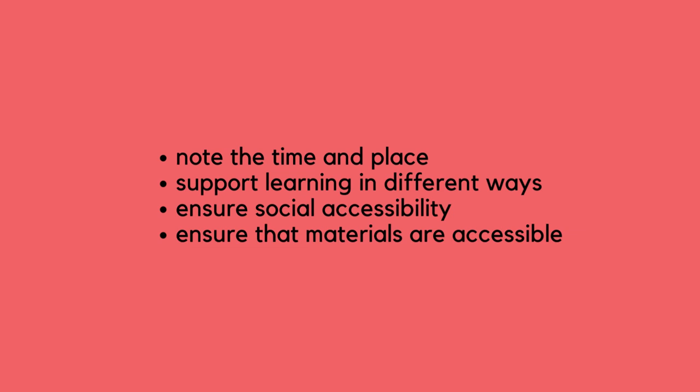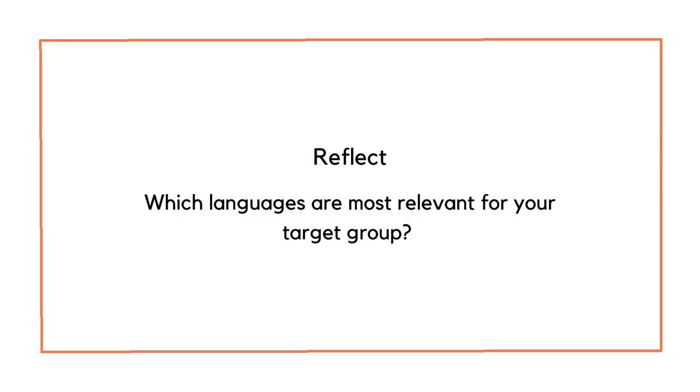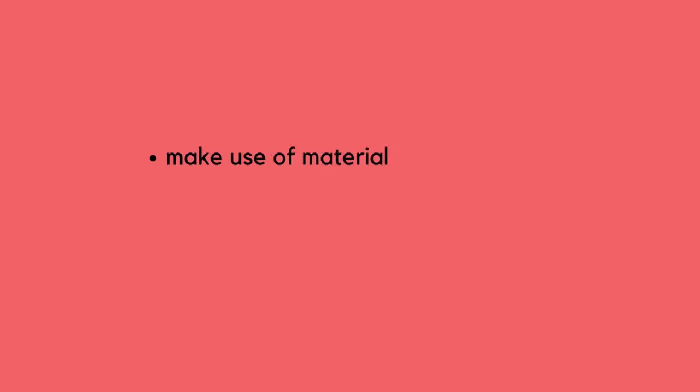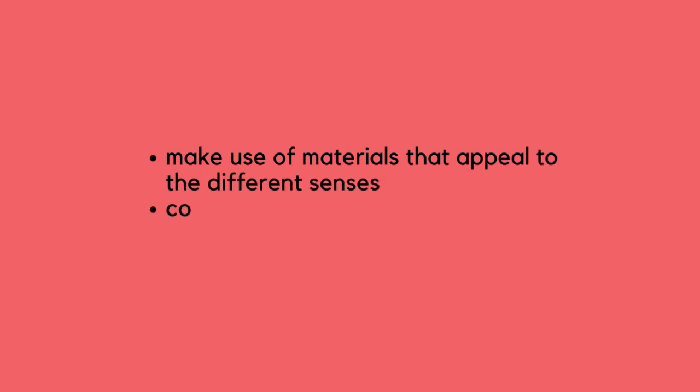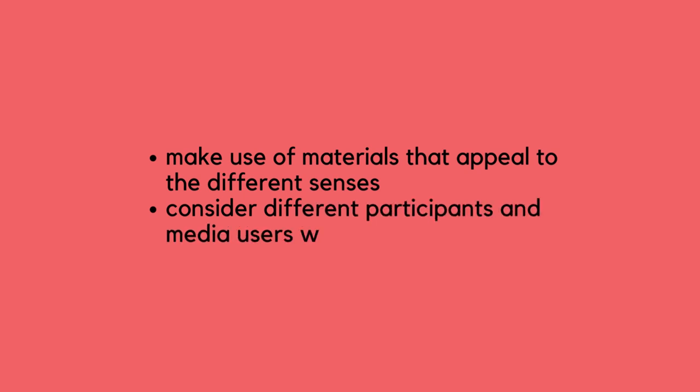Ensure that media education materials are accessible. Where possible, provide materials in different languages and in both text and audio versions. Plain, clear, simple and concise language and text layout help make the material easier to understand. Which languages are most relevant for your target group? Make use of materials that appeal to the different senses. Communicate in a clear and structured way so that participants are noticed. Make bold and varied use of different communication methods and channels to promote accessibility.